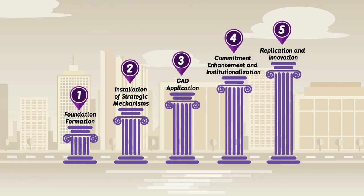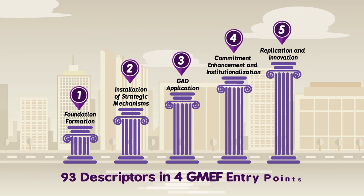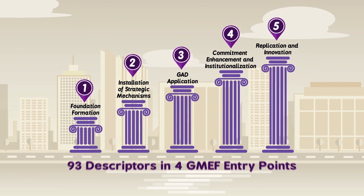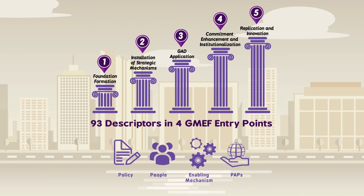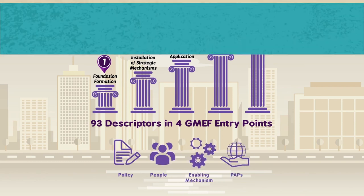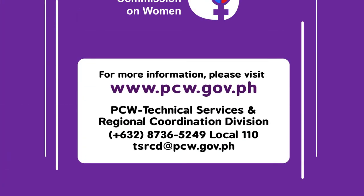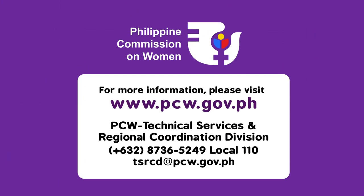The descriptor matrix consists of 93 descriptors distributed across the four GMEF entry points, spanning Level 1 to Level 5.